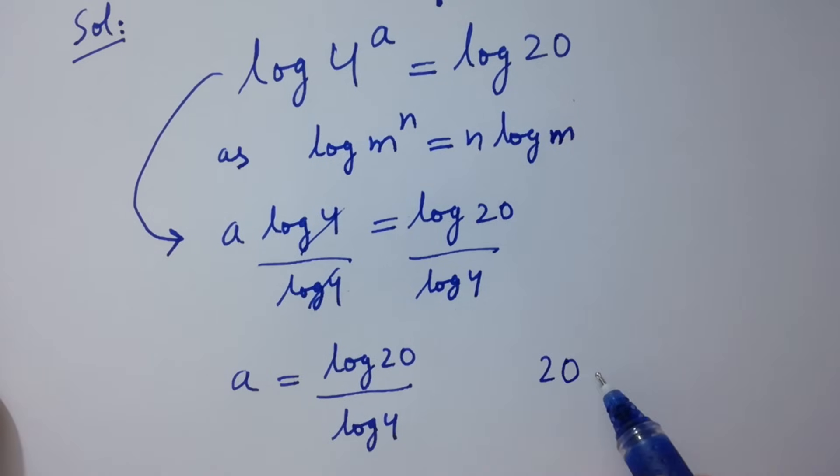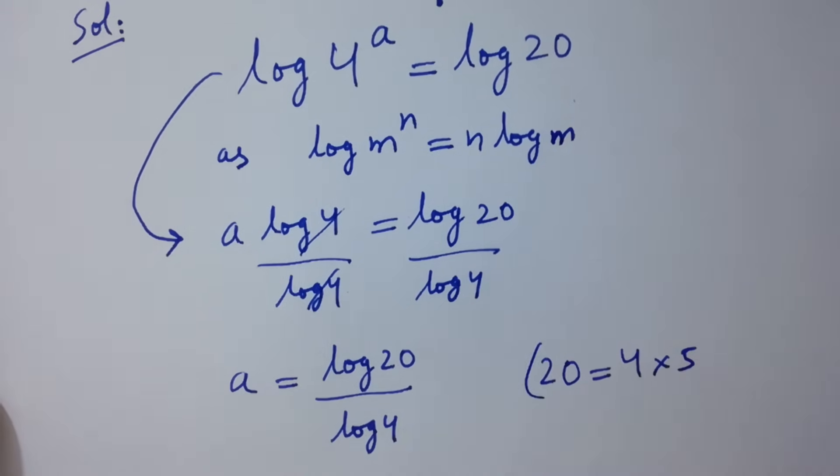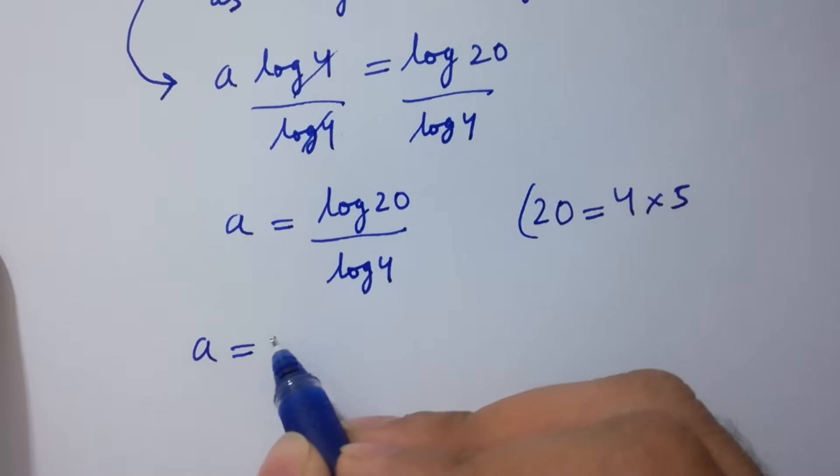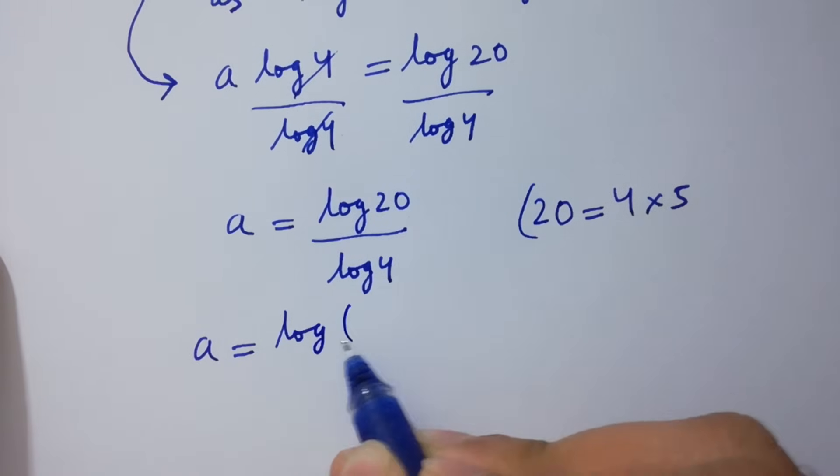As 20 equals 4 times 5, we have a equals log 4 times 5 over log 4.